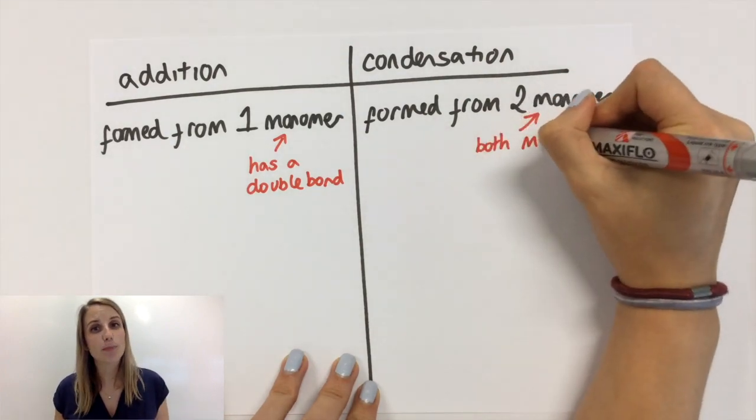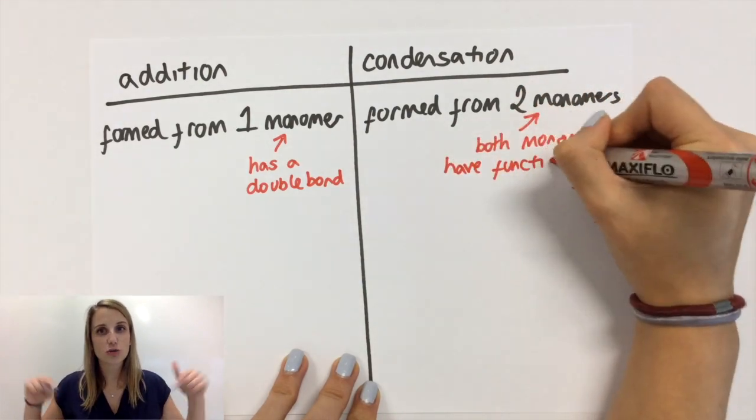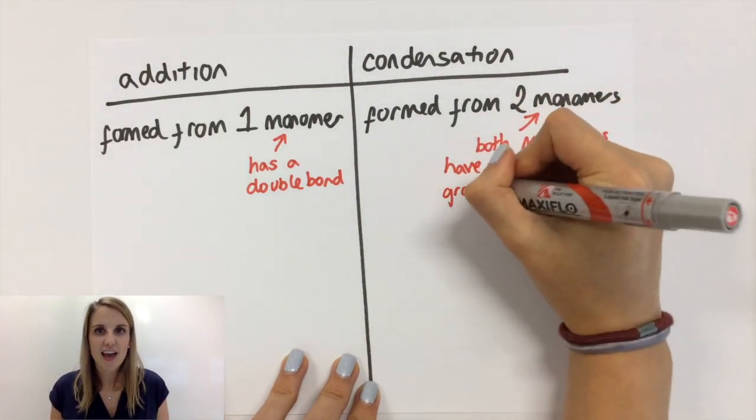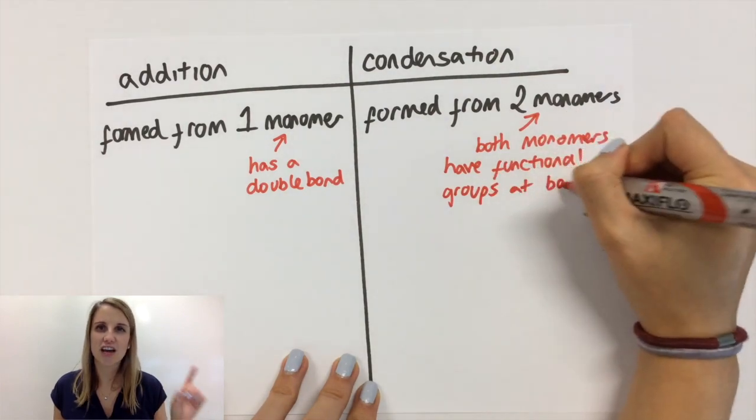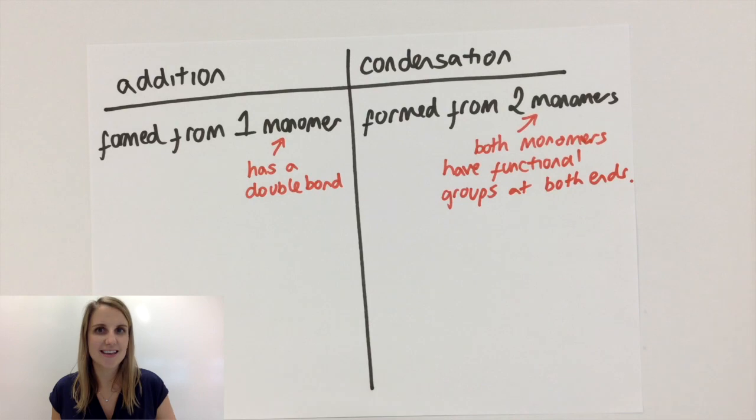In condensation polymerization, you'll notice that both of your monomers have functional groups at either side. If you want to know more about that, then check the next video out about what a condensation polymer is and for examples.